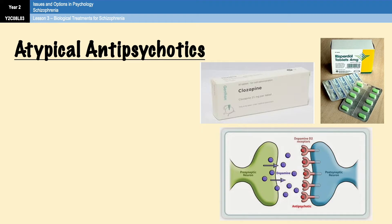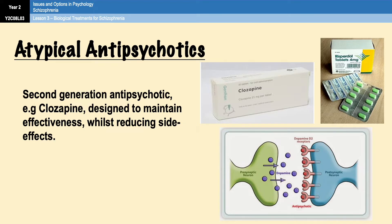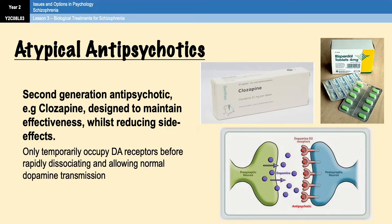The problem of side effects that we mentioned earlier was addressed in the development of the second-generation antipsychotics in the 1960s and 70s, and these were known as atypical antipsychotics. Atypical antipsychotics were designed to maintain the effectiveness of typical antipsychotics whilst reducing the side effects. They work in the same way as typical antipsychotics in that they block dopamine receptors without stimulating them. However, a big difference is that they only temporarily occupy the receptors before disassociating and allowing normal dopamine transmission to occur.